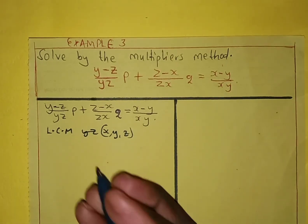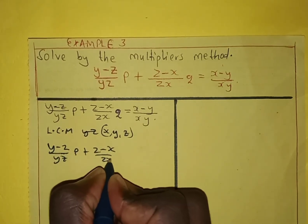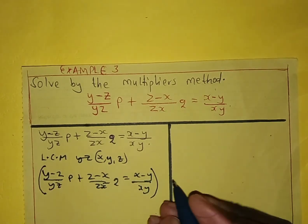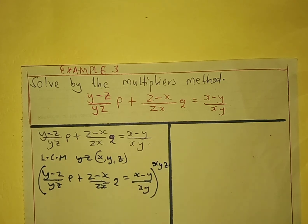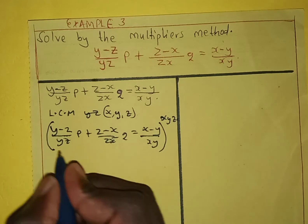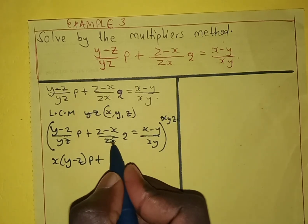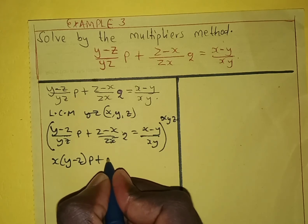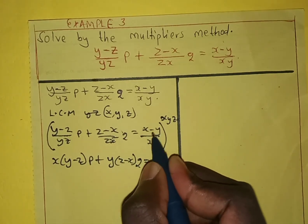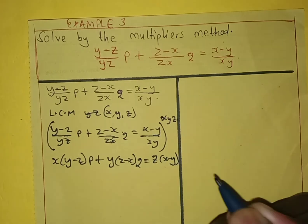So we multiply through the equation by the LCM, which is xyz. The first term gives x(y-z) for p, the second term gives y(z-x) for q, and the right-hand side gives z(x-y). So our simplified equation is: x(y-z)p + y(z-x)q = z(x-y).